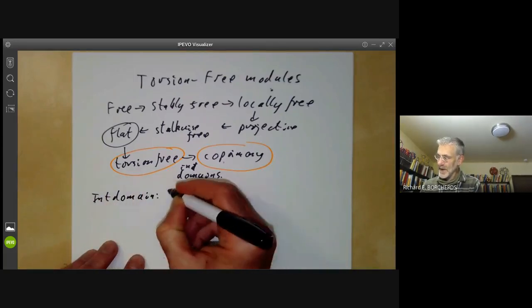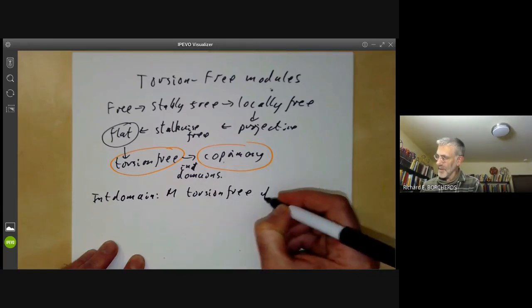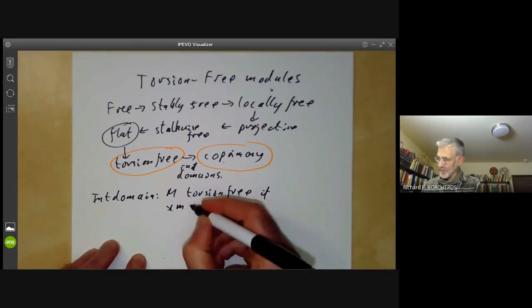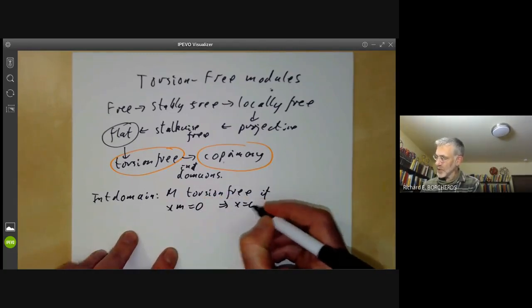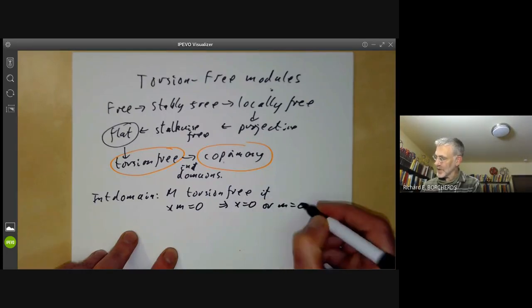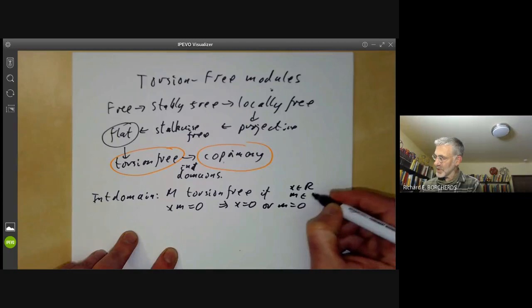We say M is torsion-free if XM equals naught implies X equals naught or M equals naught. Here, X is in the ring R and M is in the module M, of course.